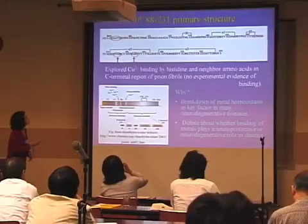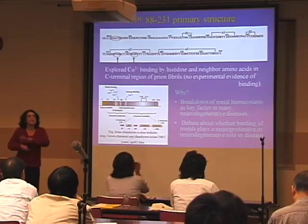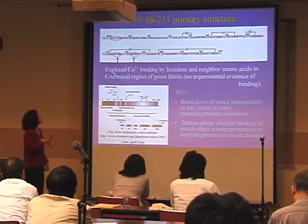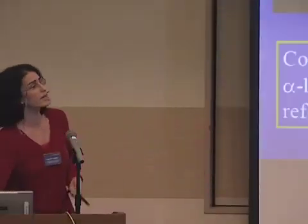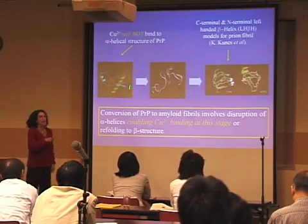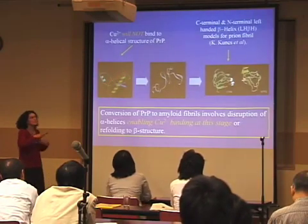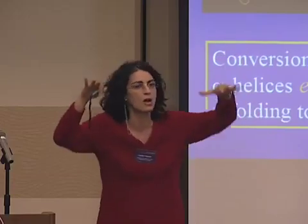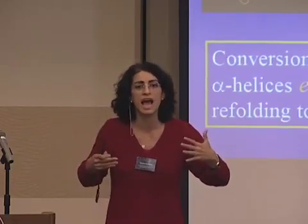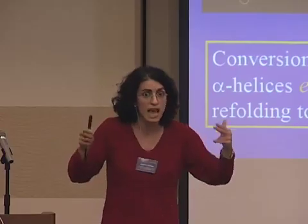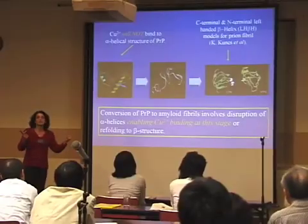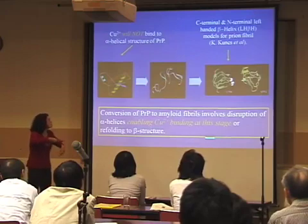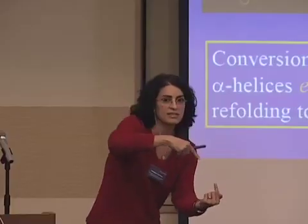I have studied segments that are experimentally known not to bind copper — they lie within the alpha helical structure, so it's not surprising they don't bind. However, if these alpha helices are disrupted, for instance by lowering the pH of the environment — something that could happen during neuronal synapses — then it is possible for these segments to bind copper, and therefore follow a path different from refolding into the disease structure.